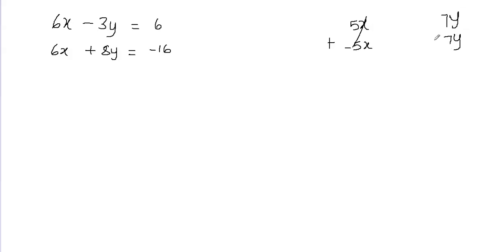Then you can subtract the equations to eliminate that variable. If you subtract, 7y minus 7y equals 0, so the variable is eliminated.